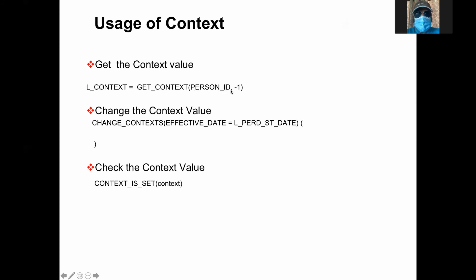Context values can be accessed. You can get the value — for example, GET_CONTEXT(PERSON_ID, L_CONTEXT). This is how you extract the value from the context. This is the context name. Person ID is passed by person ID — you don't have to use a code. The minus one is the default value, in case the person ID information is not passed. You will get minus one. This is how you get that value. Then you can check: if L_CONTEXT equals minus one, the context is not there.